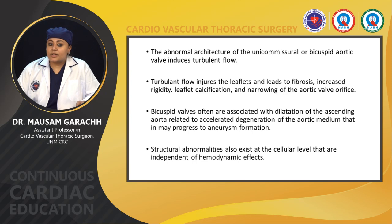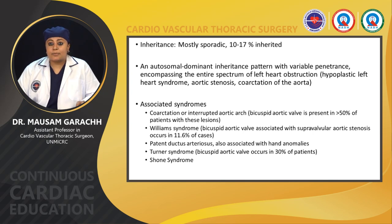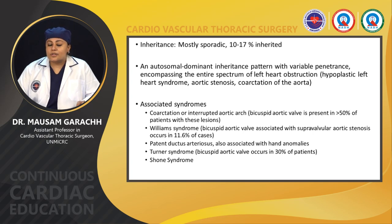Regarding inheritance, it is mostly sporadic. In 10–17% it is inherited, with autosomal dominant type with variable penetrance encompassing the entire spectrum of left heart obstruction — i.e., hypoplastic left heart syndrome, aortic stenosis, and coarctation of aorta. Associated syndromes include coarctation or interrupted aortic arch, Williams syndrome, patent ductus arteriosus, hand anomalies, Turner's syndrome, and Noonan's syndrome.